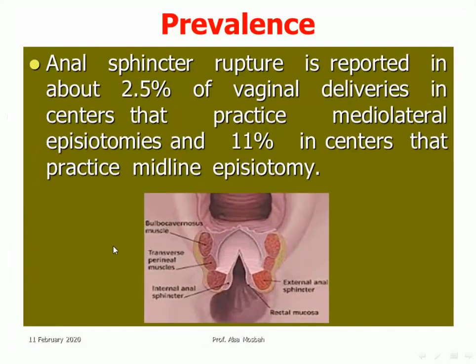The prevalence of anal sphincter rupture is reported in about 2.5% of vaginal deliveries in centers that practice mediolateral episiotomy, and 11% in centers that practice midline episiotomy. So mediolateral episiotomy is safer.